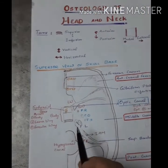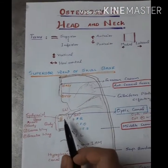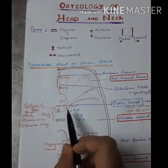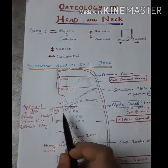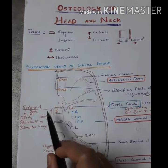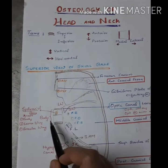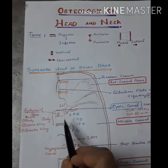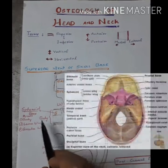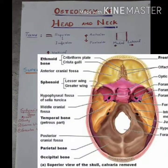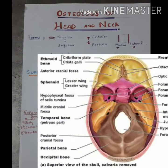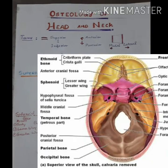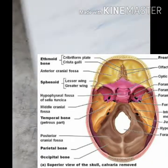And this is the foramen magnum. The sphenoid consists of three parts: the body, the lesser wing, and the greater wing.